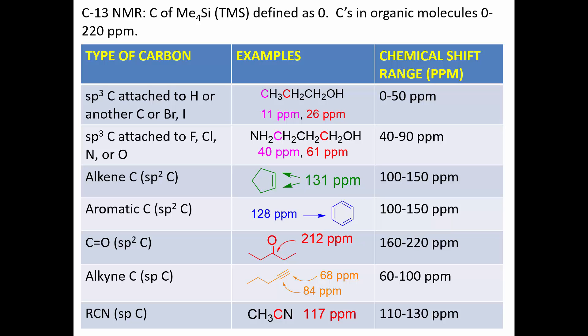Alkyne SP carbons come at 60 to 100 ppm. In a compound with two alkyne carbons, they are not equal to each other and come at different chemical shifts. Because nitrogen is a little more electronegative, the SP carbon of a nitrile has a slightly higher chemical shift.